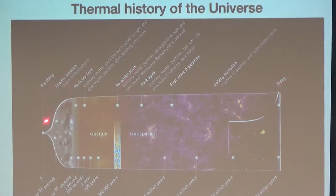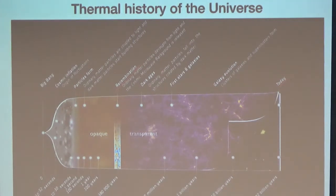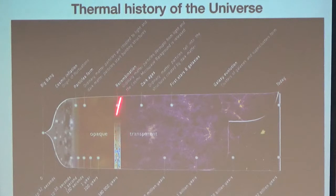After inflation, you thermalize and form a plasma in thermal equilibrium, then expand much more slowly. As you expand you cool down. In the first phase, the temperature is high enough that the whole plasma is ionized — you have free electrons and free protons — with electrons scattering with photons. The interaction time is very short, so you cannot see anything from this period.